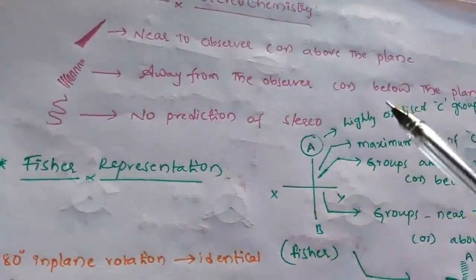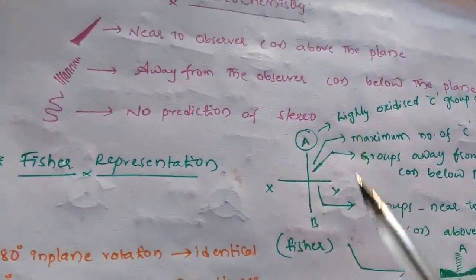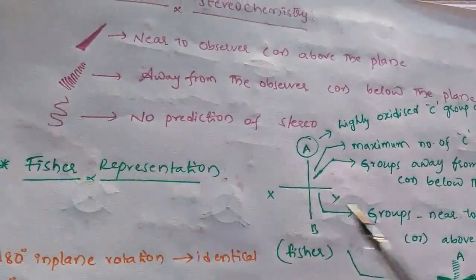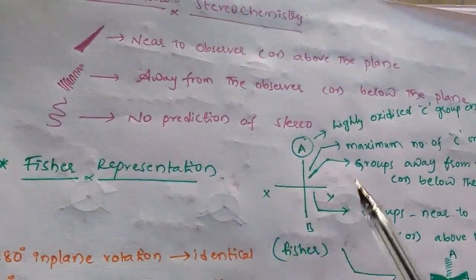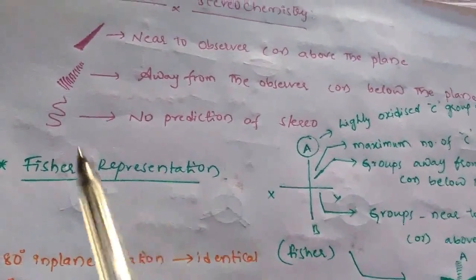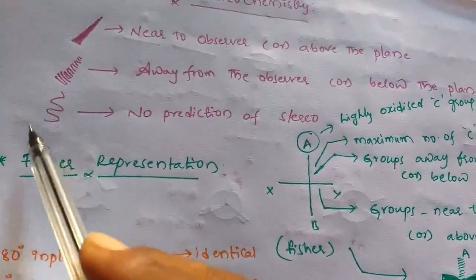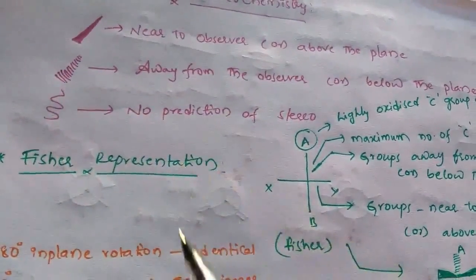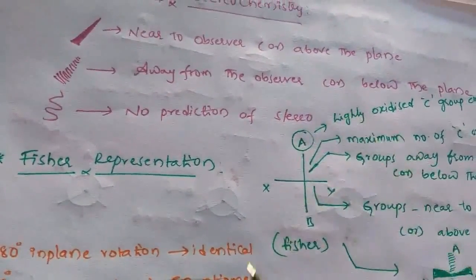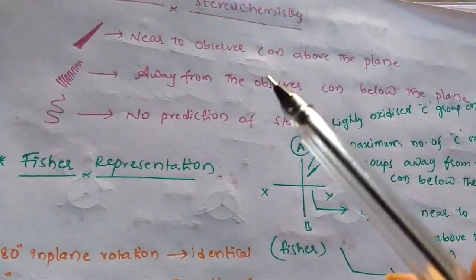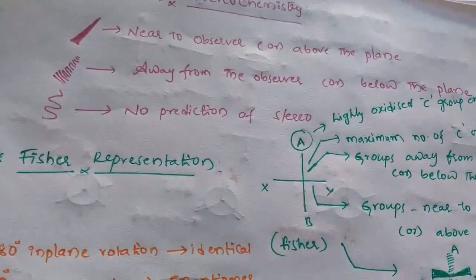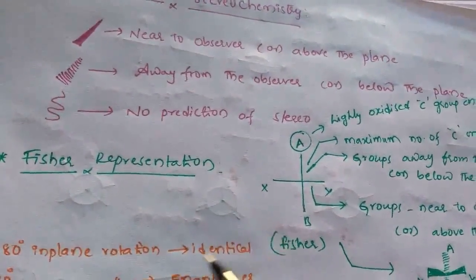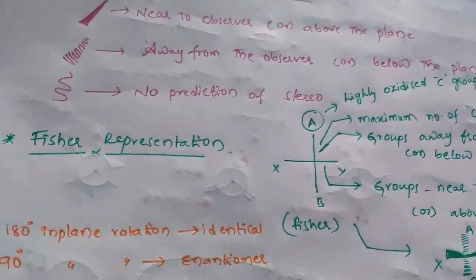If we observe a dotted line, dotted bar, or dotted triangle, that indicates the group is away from the observer or below the plane of the molecule. And if we have a wavy representation to a particular group on a given organic structure, that indicates no prediction of stereochemistry — that means the group may be present either above or below the plane of symmetry. So the wavy indication has no stereochemical prediction.